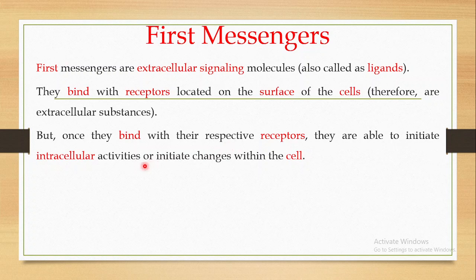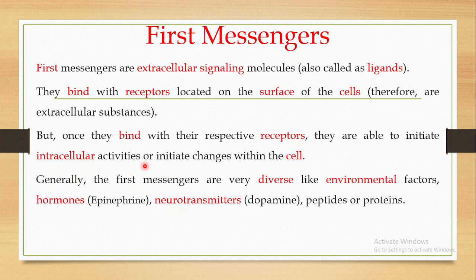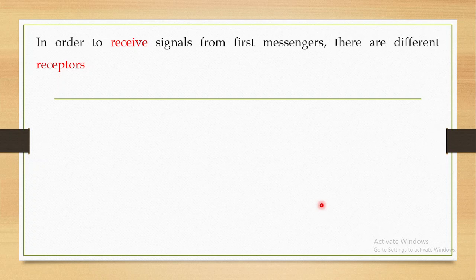Once these extracellular signals bind to their respective receptors, they are able to initiate intracellular activities, or they initiate changes within the cell. Most of the time these changes are changes in gene expression. These first messengers are very diverse — they can be environmental factors, hormones such as epinephrine, neurotransmitters such as dopamine, peptides, or proteins. They are called first messengers because they start the cell signaling pathway in a cell.